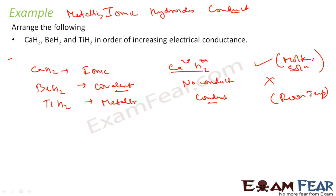So if you talk about the conductivity, this guy always conducts, so this guy is max TIH2, the next is CAH2 because it conducts when it is in molten state or solution state. And then BEH2 because it doesn't conduct. This is the order.